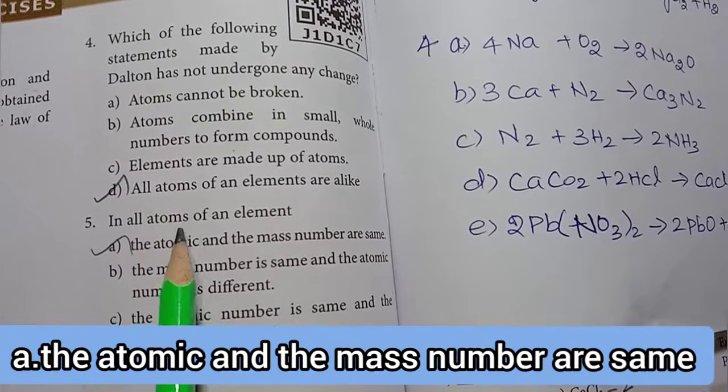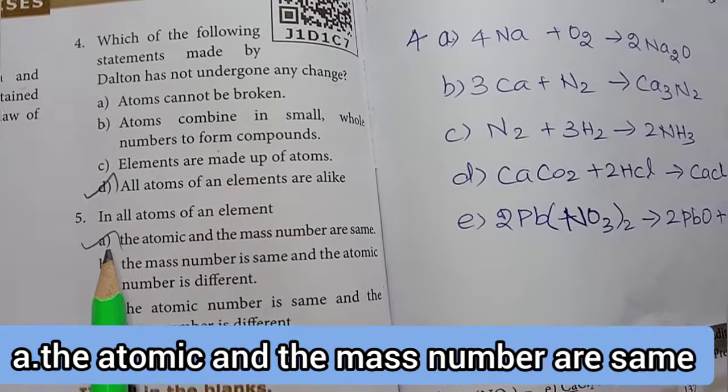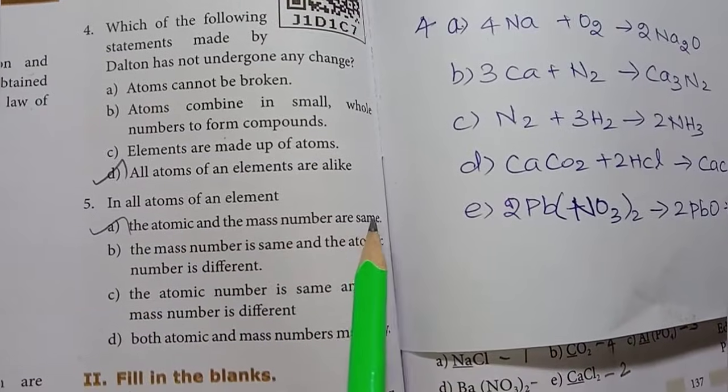Fifth one: In all atoms of an element... Option A, the atomic and the mass number are same. This is the right option.